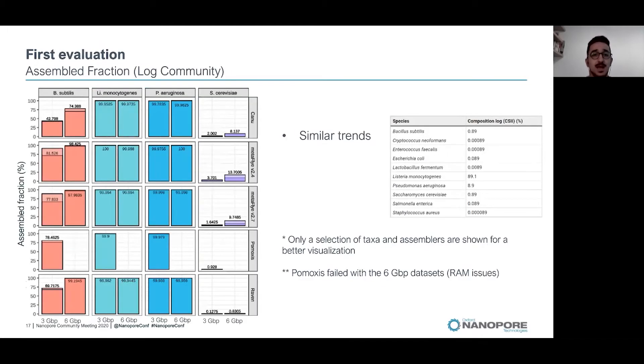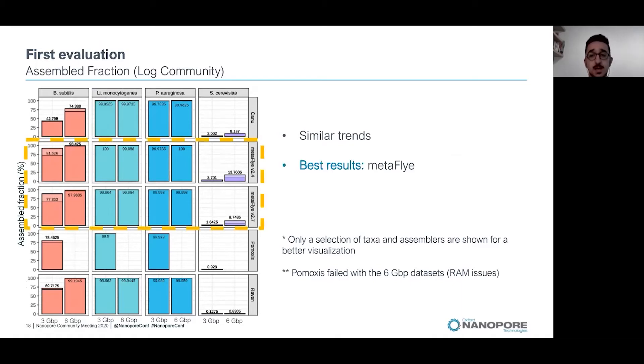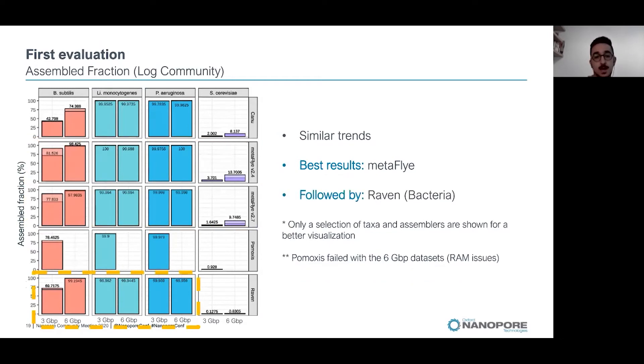When analyzing the log community, we found similar trends. But you have to take into account that the composition of the log community was biased. It was in a logarithmic scale, so we were only able to recover some taxa. This taxa is what I'm showing in the graph. Again, best results overall were obtained by MetaFlye, but this time Raven and also Pomoxis and Canu work relatively well too.